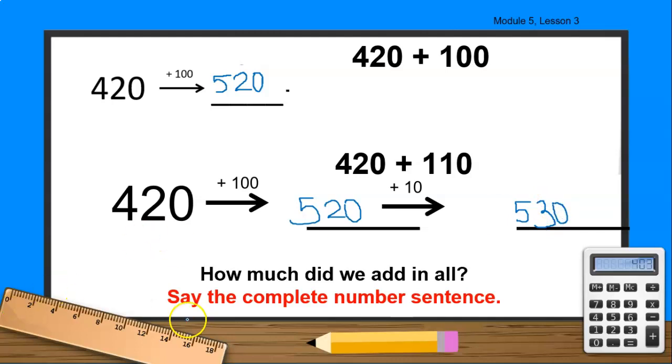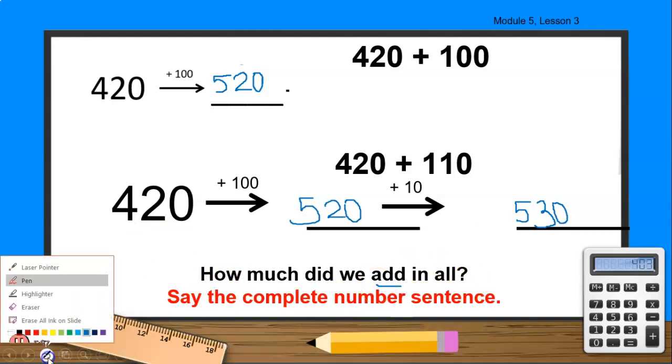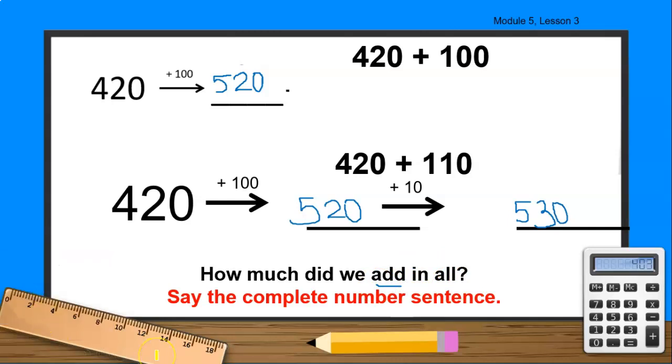Now boys and girls, how much did we add in all? Think about it. How much did we add in all? Yes, we added 110. Look, first is the number that goes here. I added 100, then I added 10. So, in total, I added 110.